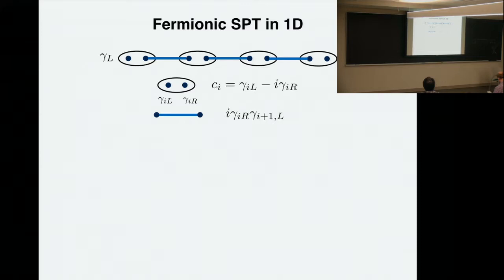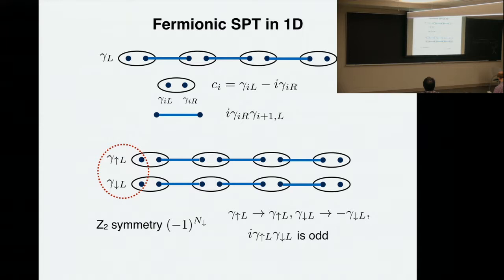You can take two of these chains, and they no longer have an odd number of Majorana modes on the boundary, but if you consider a unitary Z2 symmetry — for example, the fermion parity of one of the chains, with many chains decoupled — then although you have two Majorana modes on the boundary, you cannot couple them because the coupling term, which is i times two Majorana modes, is odd under the symmetry transformation: one gets a minus sign and the other remains invariant. So this is a simple model of a one-dimensional fermionic SPT protected by this unitary internal Z2 symmetry. You can easily construct a three-dimensional weak version of this Z2 state by packing them in an array.